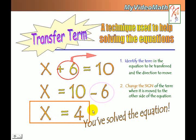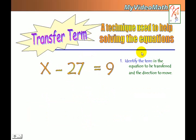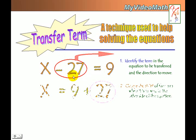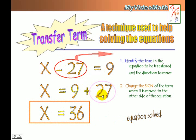As we talked about, transfer term is a technique used to help solve equations. Let's look at another example. Identify the term in the equation to be transferred to the other side — I want to move the negative 27 to the other side. Negative 27 changes sign to positive 27, and 9 plus 27 is 36. The equation is solved.